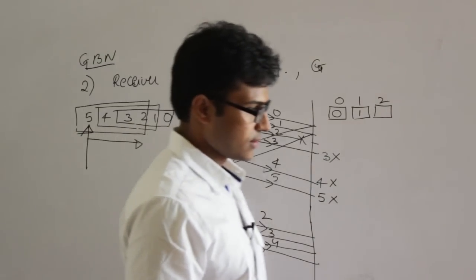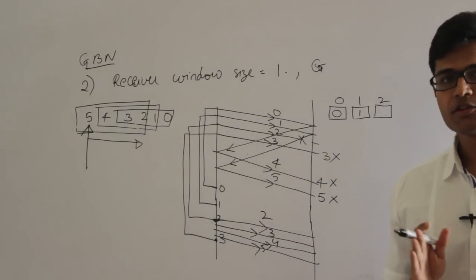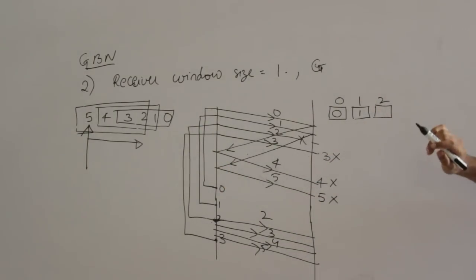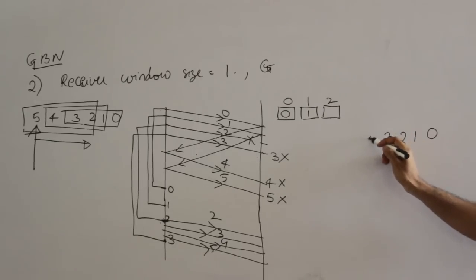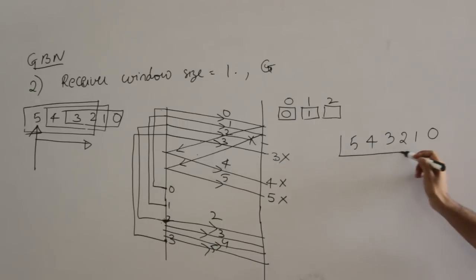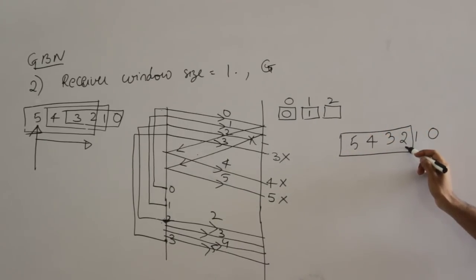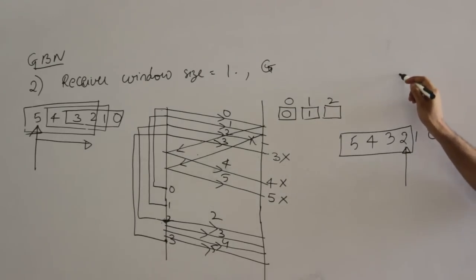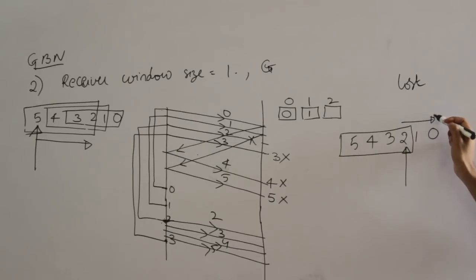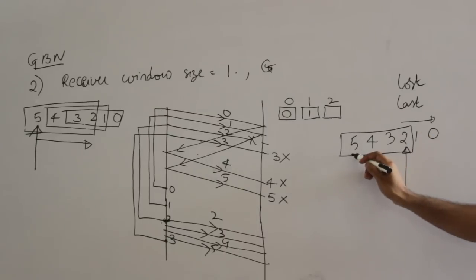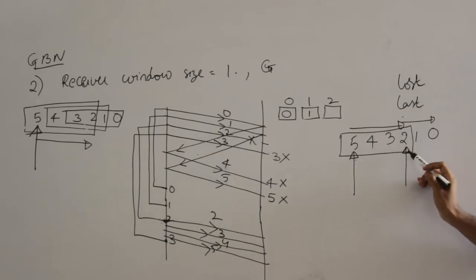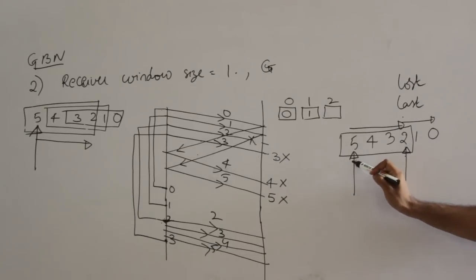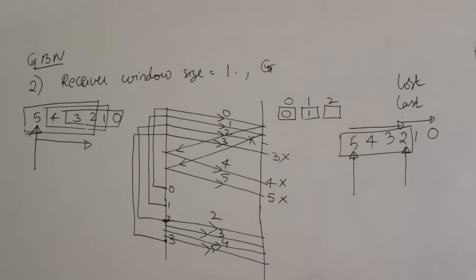One important clarification: Go Back N does not mean going back N from the lost packet — it means going back N from the last packet being transmitted. For example, sending 0, 1, 2, 3, 4, 5 — if 0 and 1 are acknowledged and there's a timeout for packet 2, Go Back N means from packet 5 (the last transmitted), you go back N and retransmit. So Go Back N is from the last point, not from the point of loss.